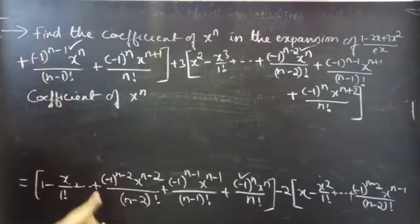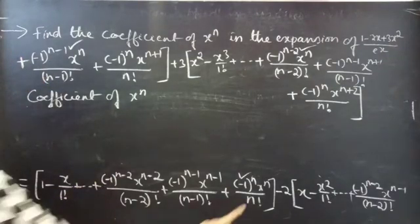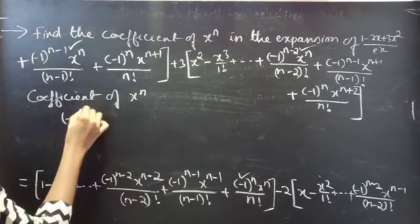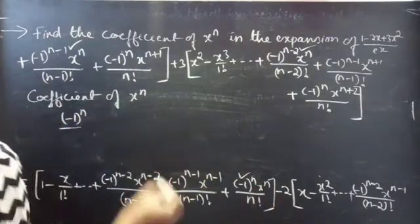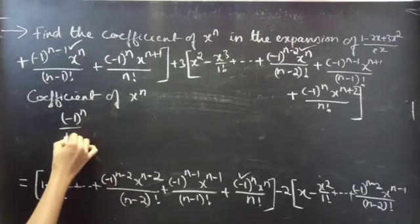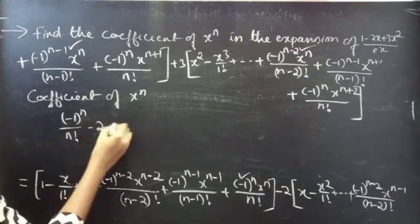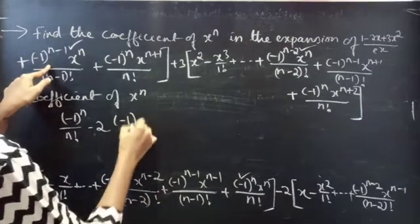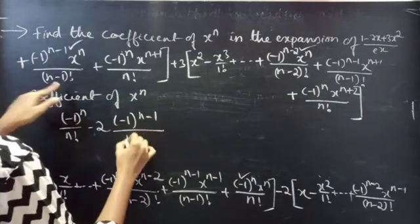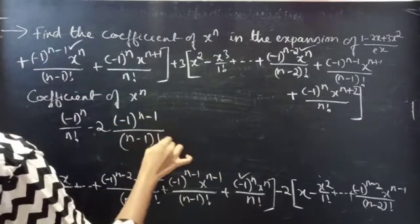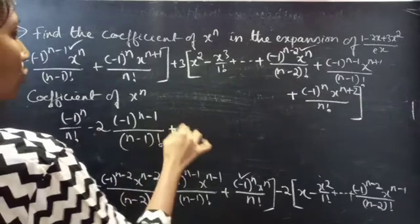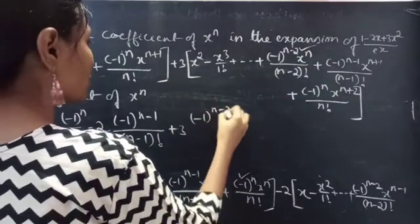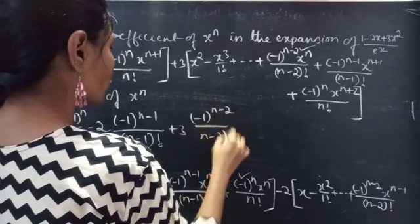From the expansion we collect the coefficient of x power n. It is: minus 1 power n by n factorial, minus 2 times minus 1 power n minus 1 by n minus 1 factorial, plus 3 times minus 1 power n minus 2 by n minus 2 factorial.